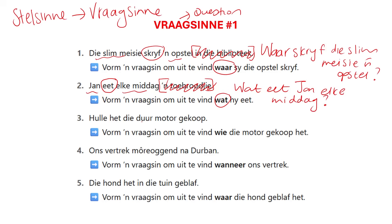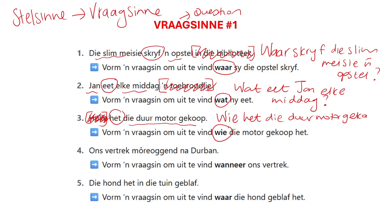Let's look at the next one. 'Hulle het die motor gekoop.' We have to form a question to find out wie het die motor gekoop — who bought the car. So we know hulle die motor gekoop het. So hulle, the subject, should not be part of our question. In our fragsene we'll start with the question word wie. Immediately after the question word will be our verb one — the auxiliary verb het. So wie het. The rest of the sentence remains the same in the same order: 'Wie het die motor gekoop?' Question mark.